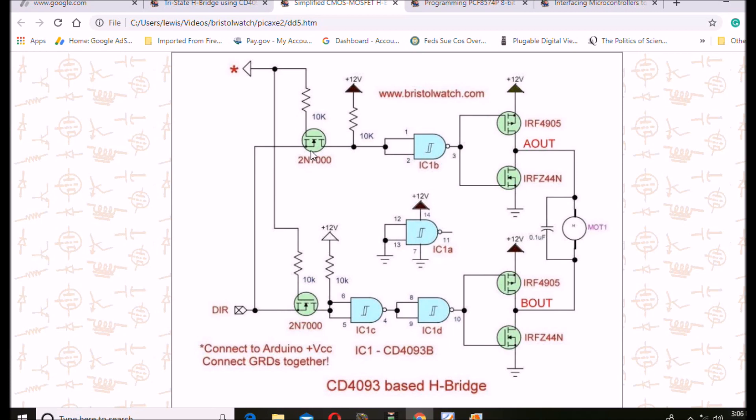In this case, we have up on the upper half here, we will call this the A circuit and A out. The lower half will be the B circuit and B out. I have tied both inputs together with a connection I call direction.